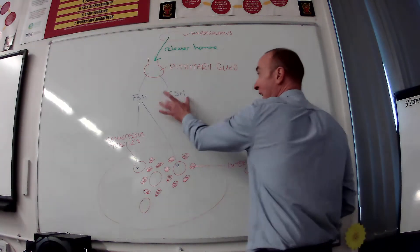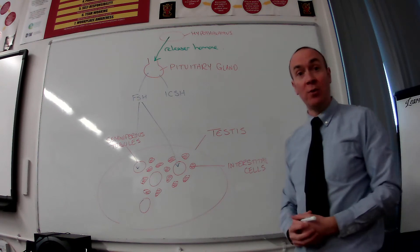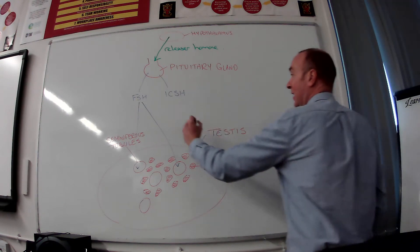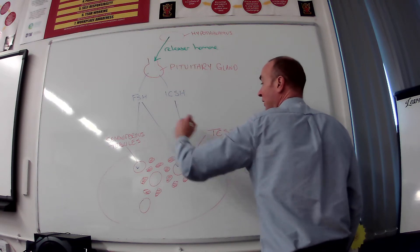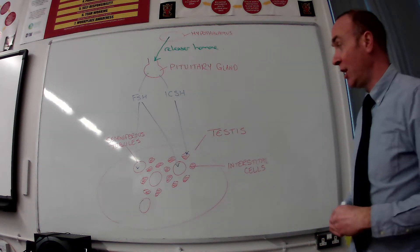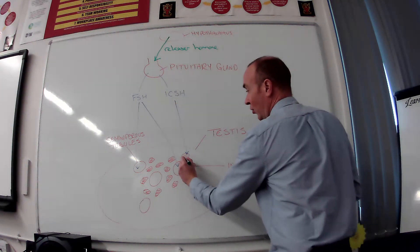On to the second of the two hormones released by the pituitary gland which is interstitial cell stimulating hormone ICSH. It acts on, funnily enough, the interstitial cells, which is why it's obviously called that. And interstitial cells are then triggered, as you'll probably remember, to produce testosterone.